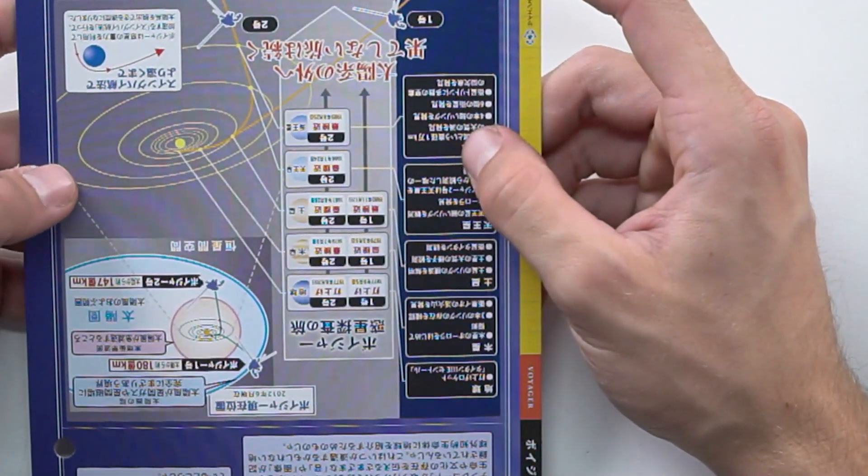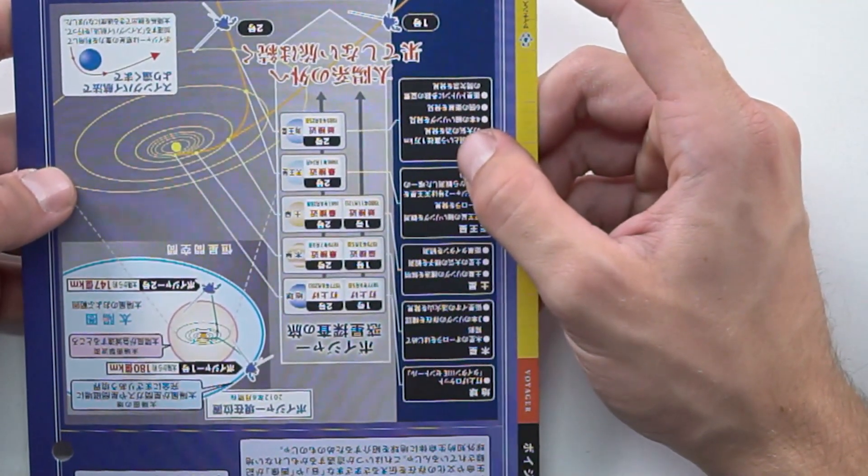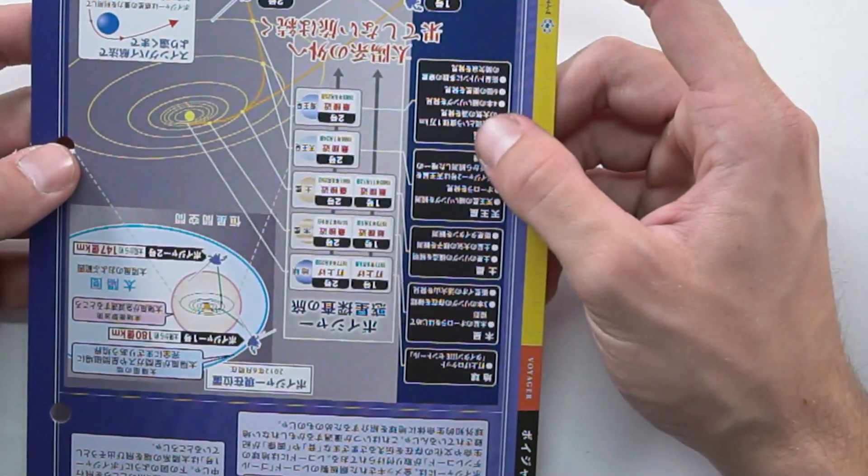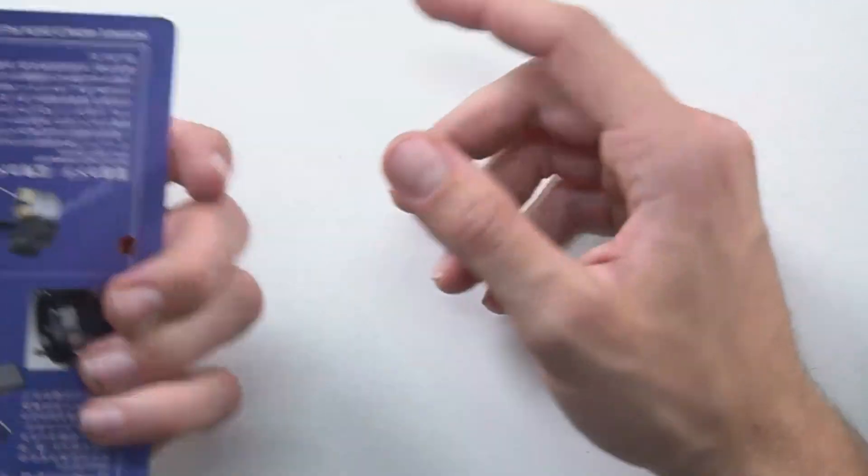Moving on. We have this really cool card explaining to you how it exited our heliosphere in Japanese. So good luck reading that.